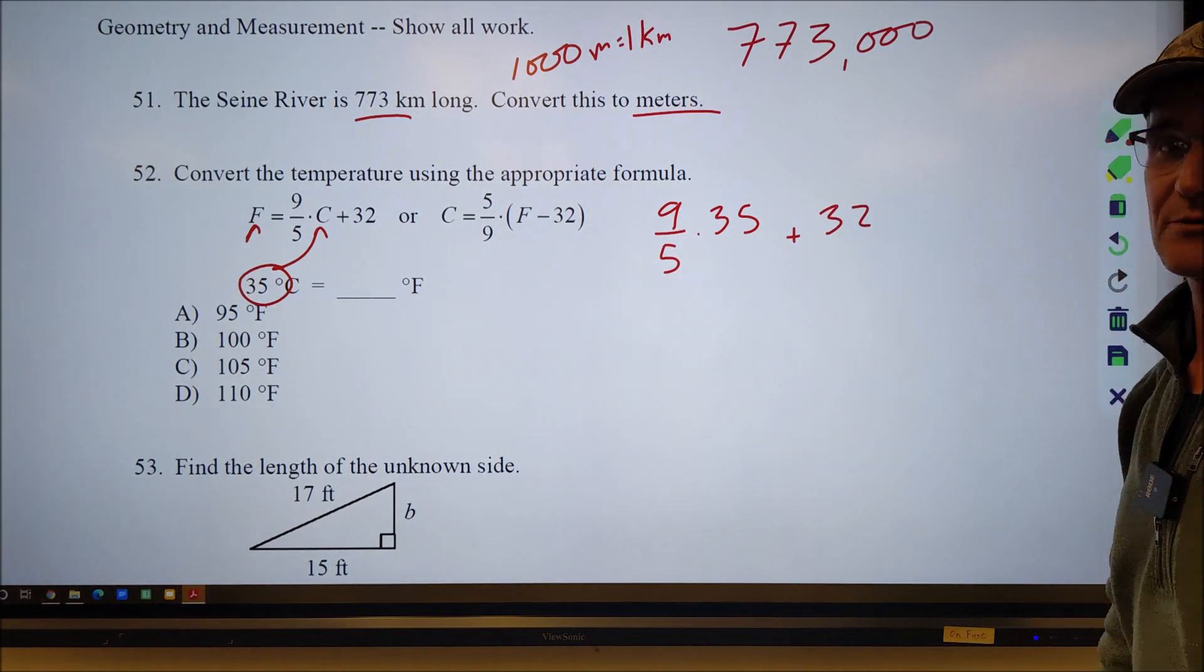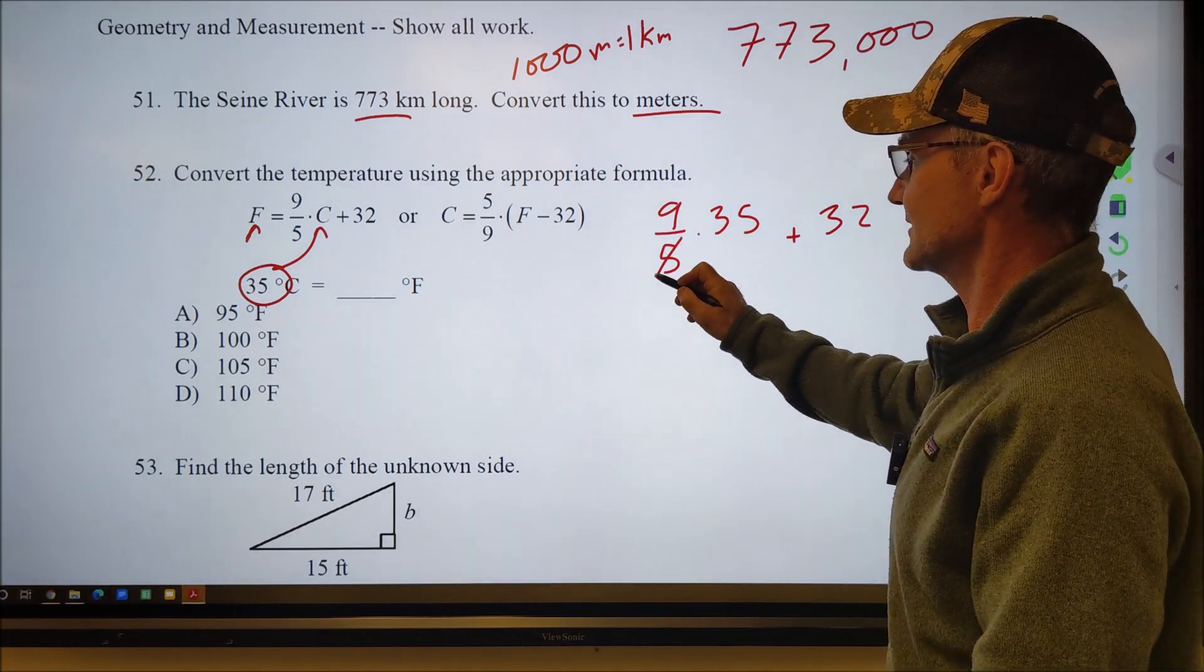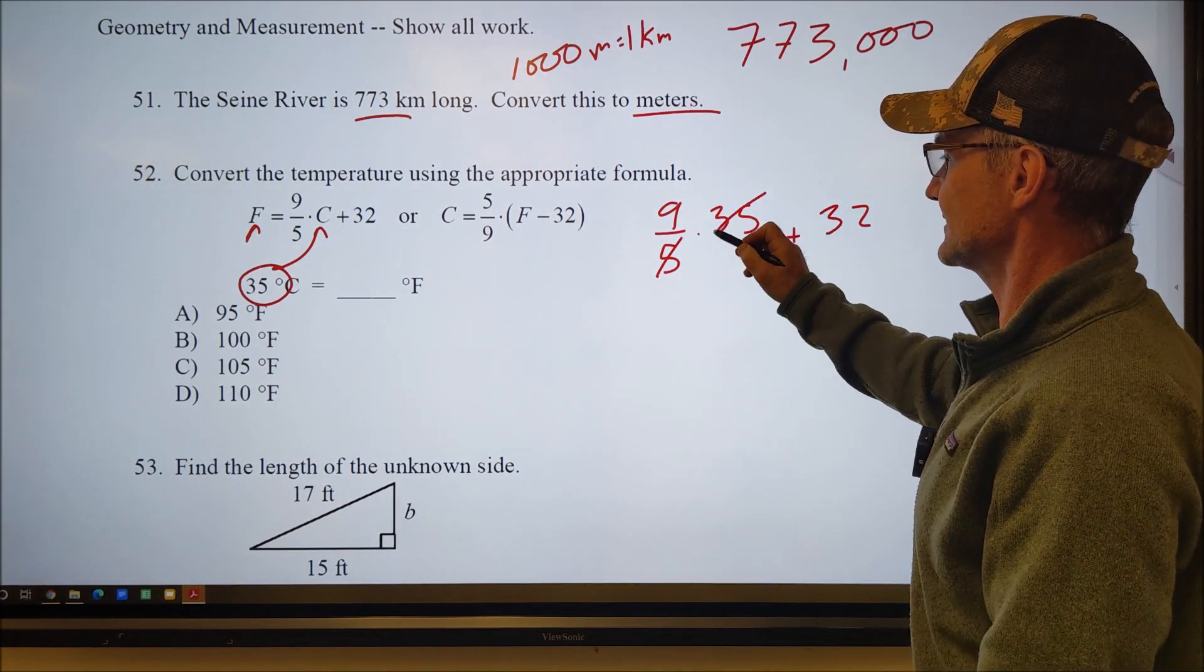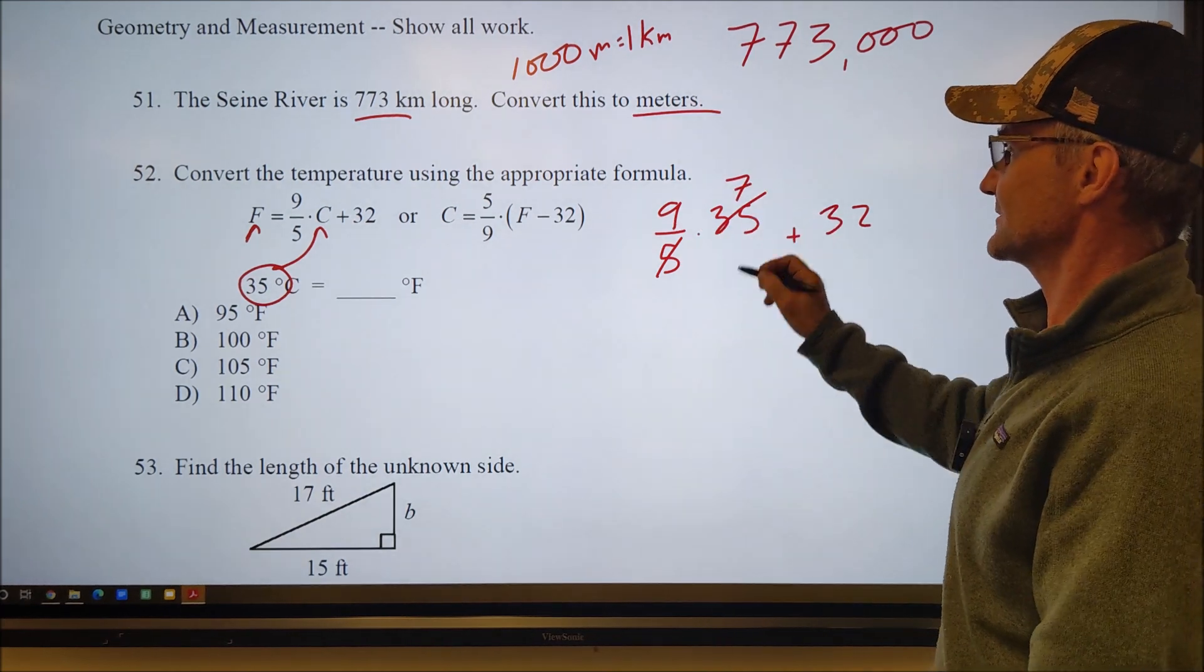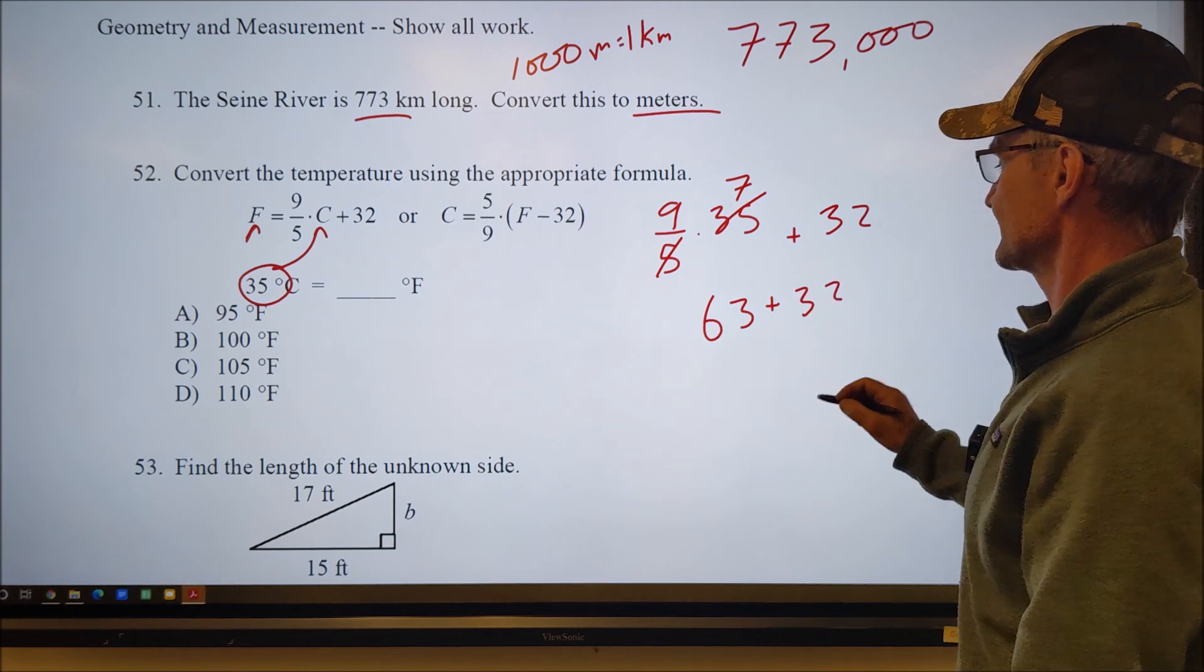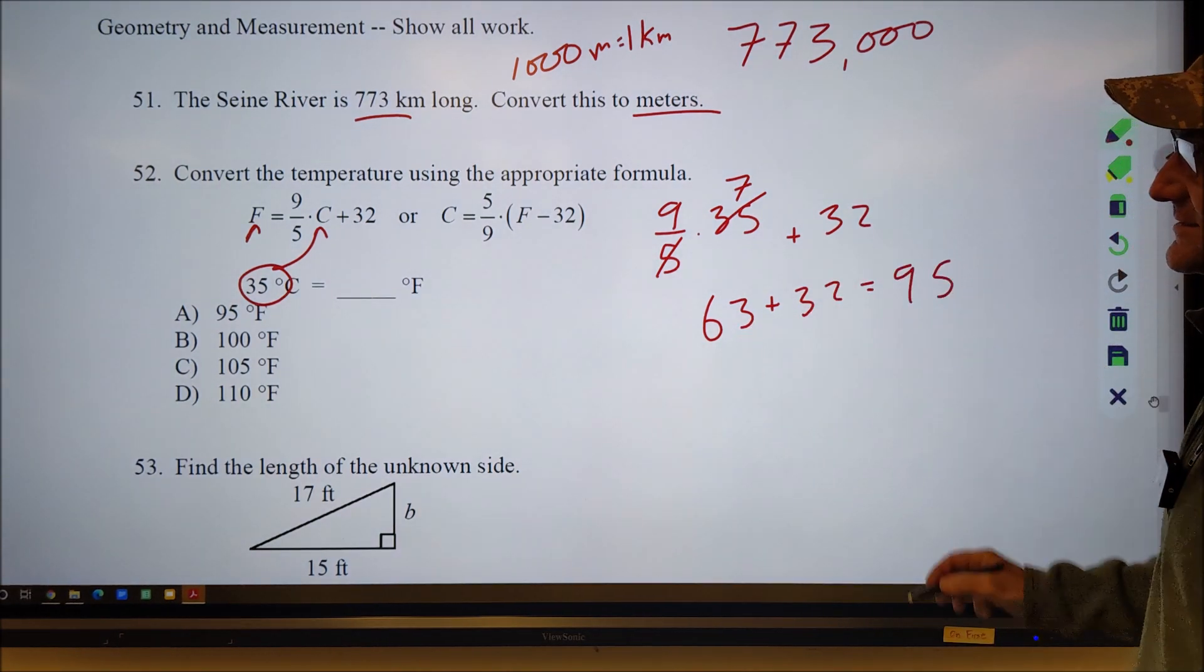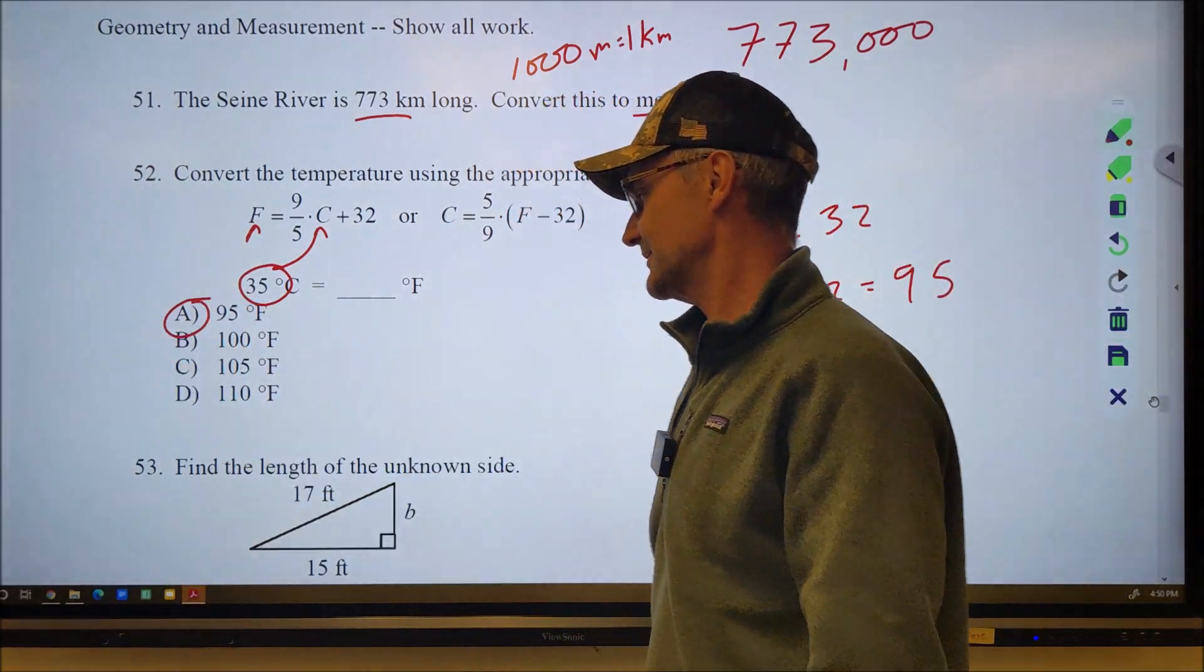I always do multiplication before addition. I'm going to cancel a little bit here. 5 goes into here one time. 5 goes into here seven times. So then I have 9 times 7, 63 plus 32. Add those together to get 95. So the correct answer is 95 degrees Fahrenheit right there.